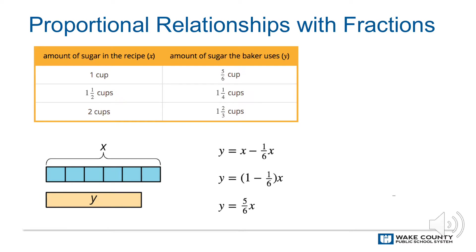Another way to write this equation is y equals 0.83x with a repeating bar over the three. The line above the three tells us that if we use long division to divide five divided by six, we will keep getting the answer three over and over. This is an example of a repeating decimal.